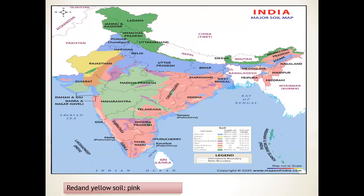Red and yellow soil is found in Odisha, Chandigarh, southern parts of middle Ganga plain, Jharkhand, some parts of Andhra Pradesh, Telangana, Tamil Nadu, and Karnataka. Very small amounts are found in Gujarat and Rajasthan as well. In the northeastern region, it is also present in Mizoram, Tripura, Manipur, and Nagaland. All the pink-colored areas on the map represent red and yellow soil.